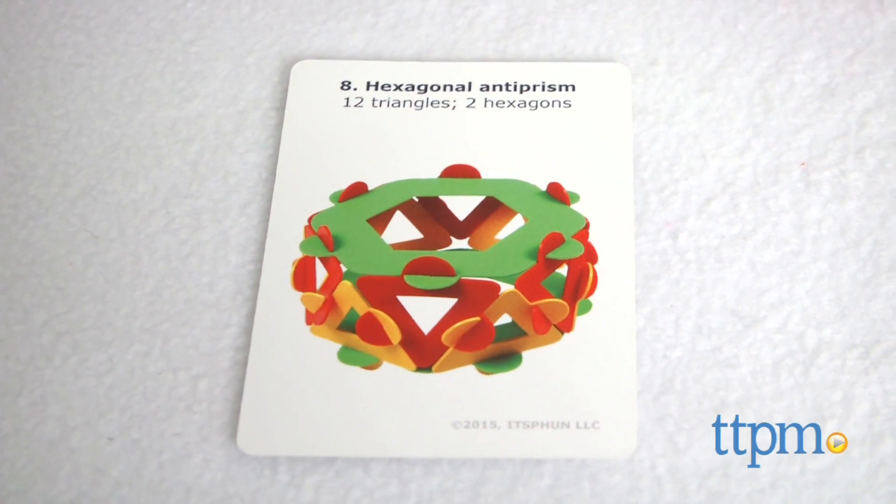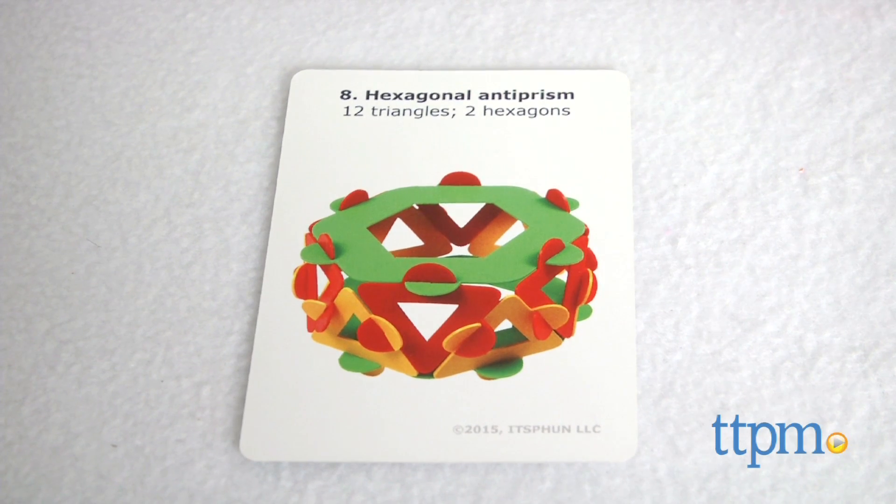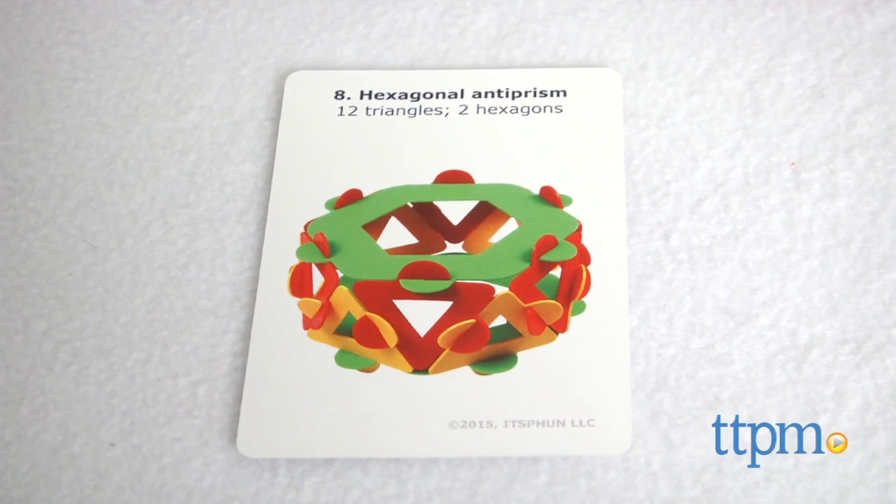So for example, to create a hexagonal antiprism, you'll need 12 triangles and 2 hexagons.